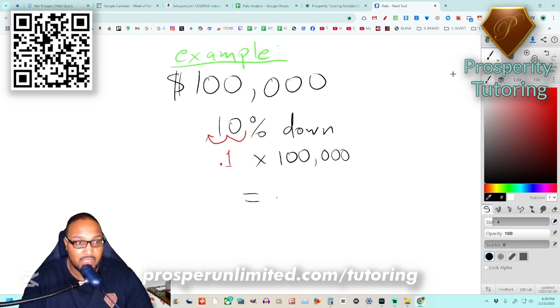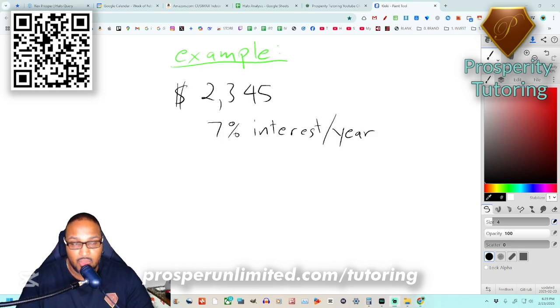What if I wanted to invest two thousand three hundred and forty-five dollars with a seven percent interest rate per year or in other words annual interest? I would have to turn that seven percent into a decimal, bring the decimal two spaces backwards and it would now become point zero seven.